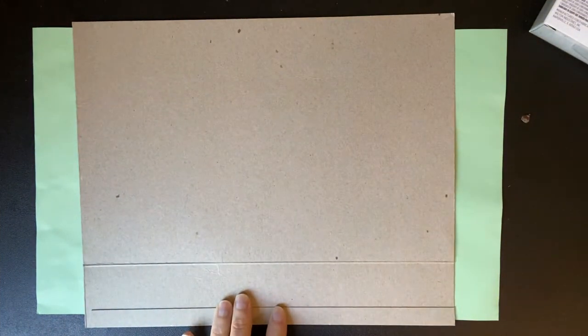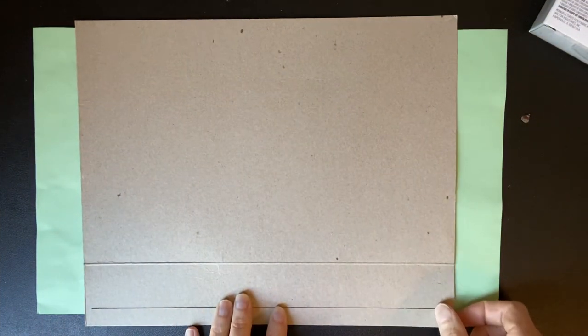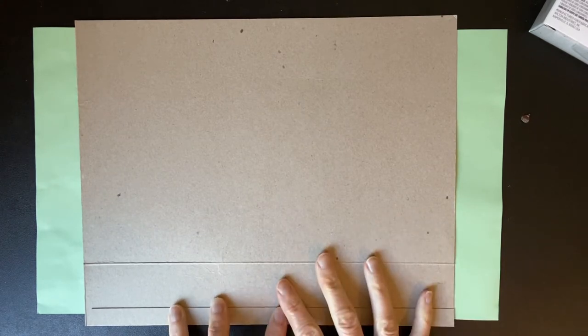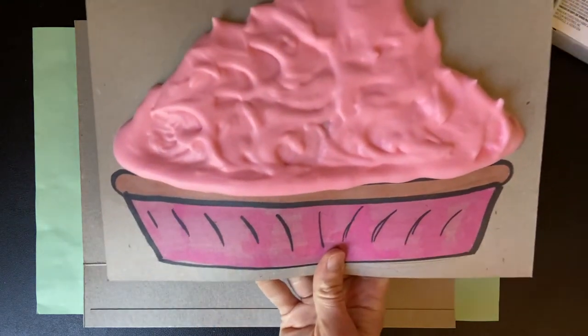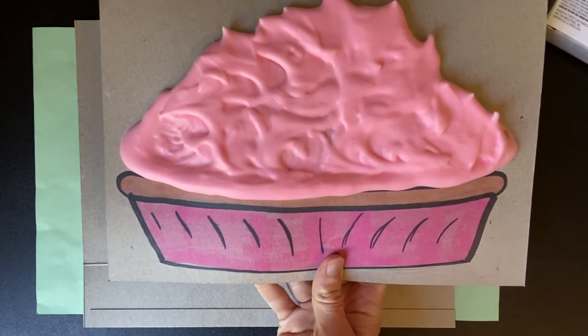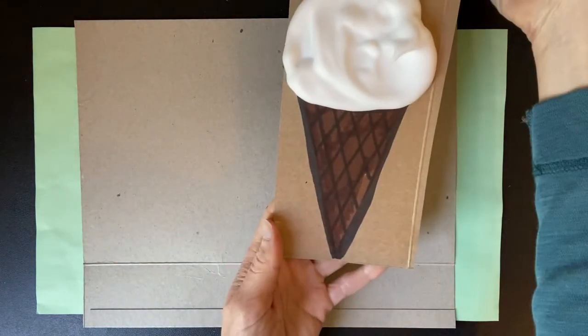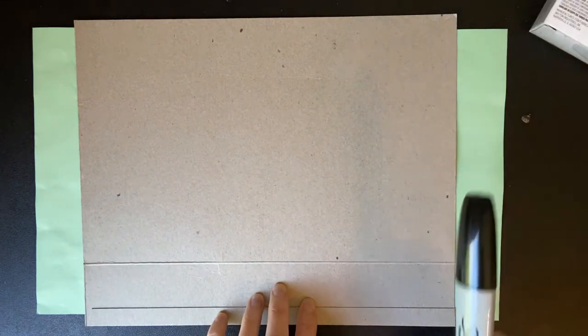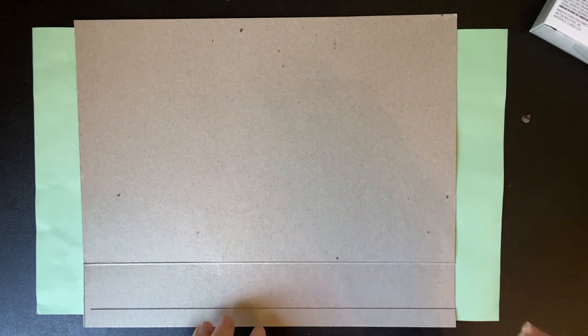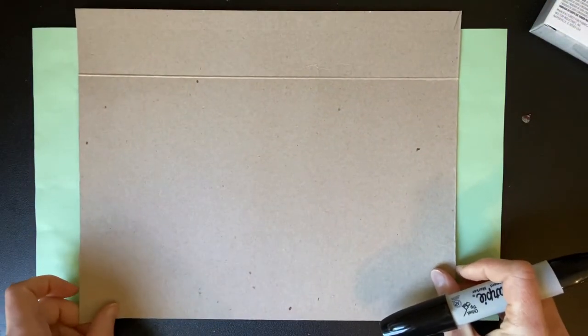All right, boys and girls. So the first part of shaving cream puffy painting that I'm going to show you is you have to know how to draw basically the base of whatever type of dessert you want to do. So the pie plate or the ice cream cone here or the cupcake holder. So I'm going to show you how to draw that first. If you're older and you're like, I don't need to see how to draw that, you can just fast forward this part of the video. But for younger kids, they're probably going to need some type of reference.